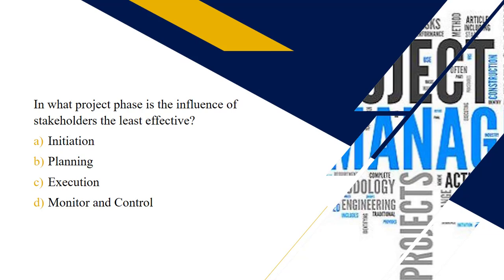Next question: in what phase of the five project phases is the influence of stakeholders the least effective? Hopefully you chose choice D — monitor and control. While stakeholders start out with a lot of influence on the project, it decreases as the project advances because execution solidifies deliverables at the expense of stakeholders being able to change their minds.